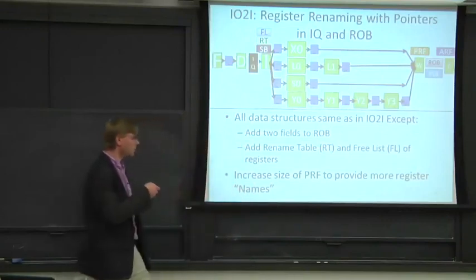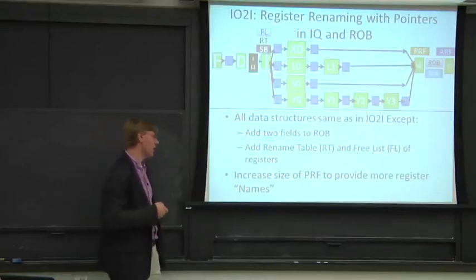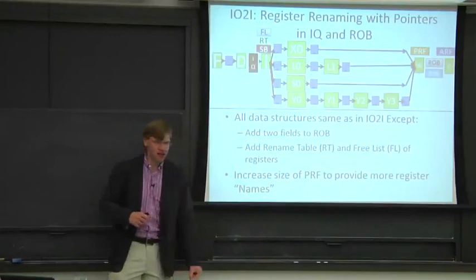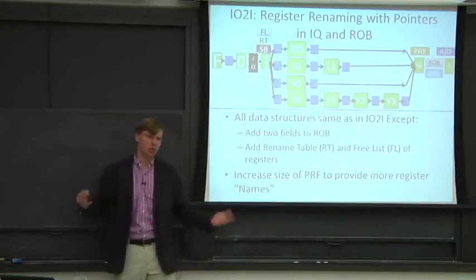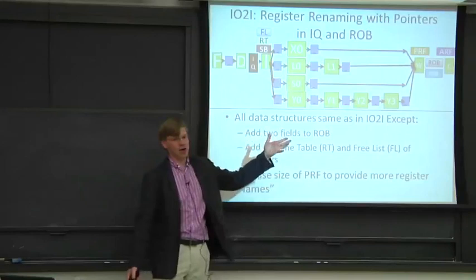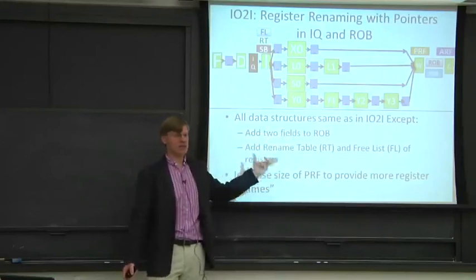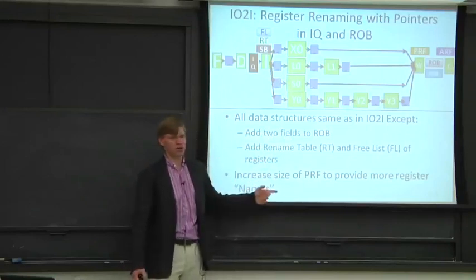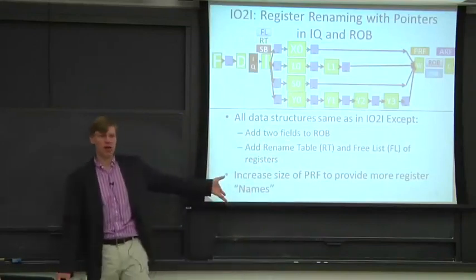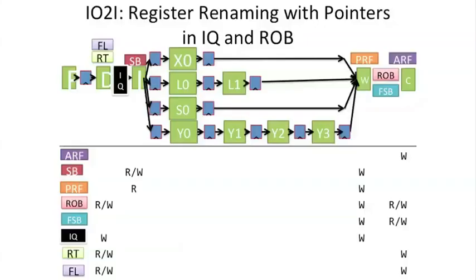We're also going to add two fields to the reorder buffer, which I'll discuss shortly. We also need to increase the size of the physical register file to get more performance. If we have the same number of physical registers as architectural registers, and we need at least one physical register per architectural register, we won't gain any performance from adding a register renaming step to our pipe.